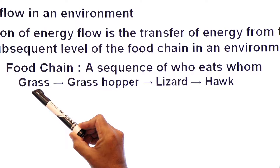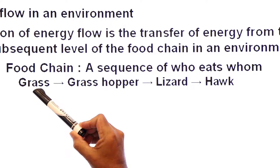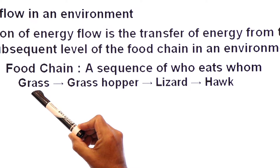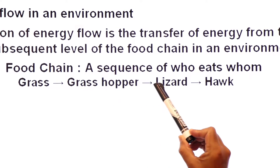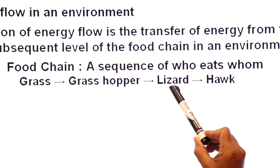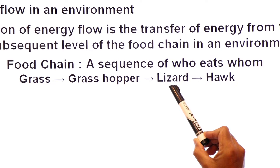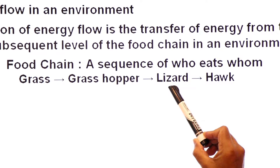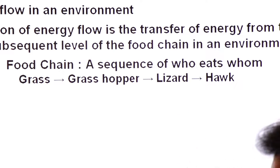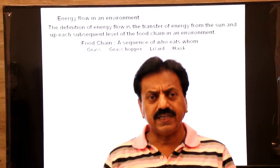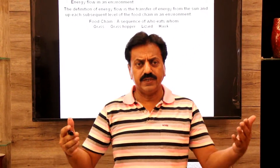This is a food chain in a grassland ecosystem. Here the grass is eaten by a grasshopper, which in turn is eaten by a lizard, and the lizard in turn is eaten by a hawk. A food chain is a sequence of who eats whom.